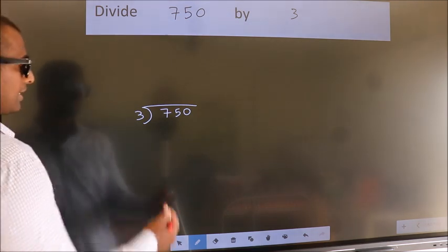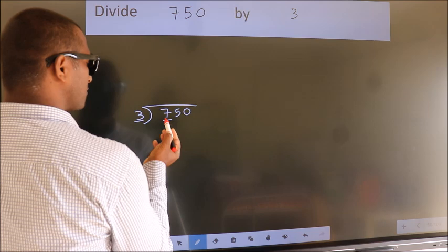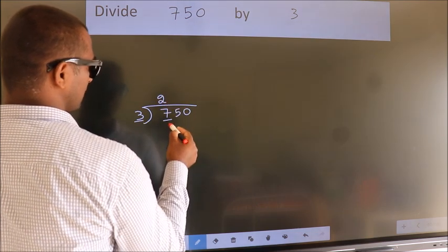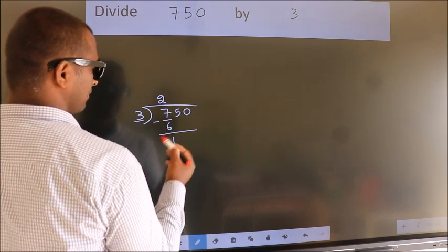Next. Here we have 7, here 3. A number close to 7 in 3 table is 3 times 2 is 6. Now, we should subtract. We get 1.